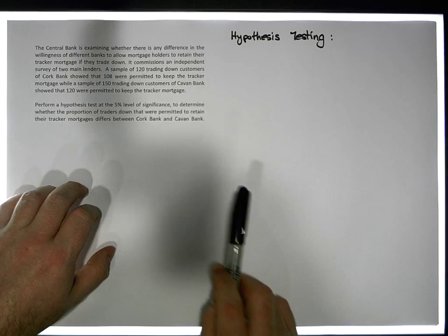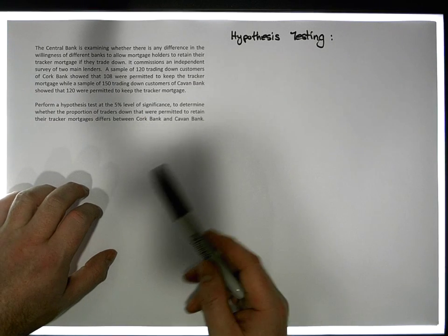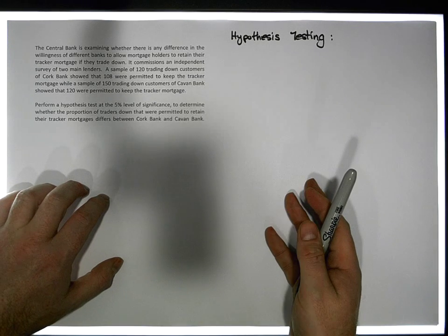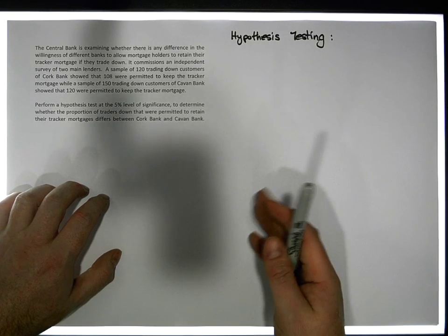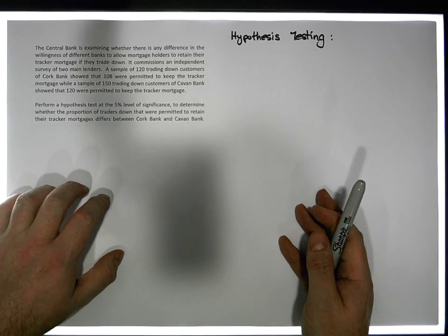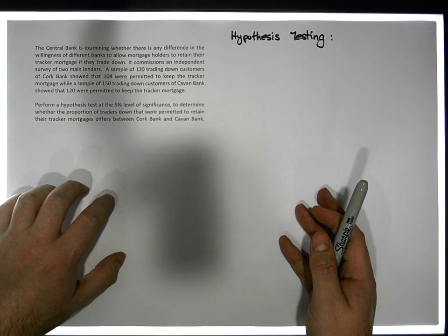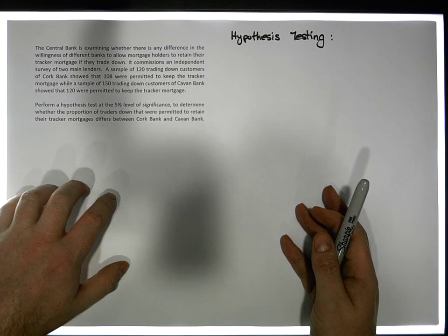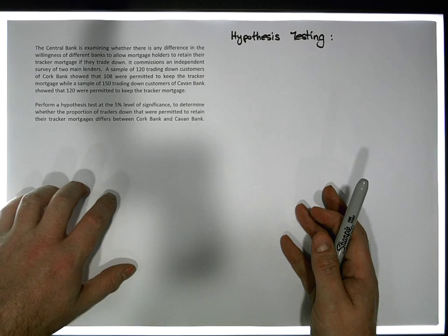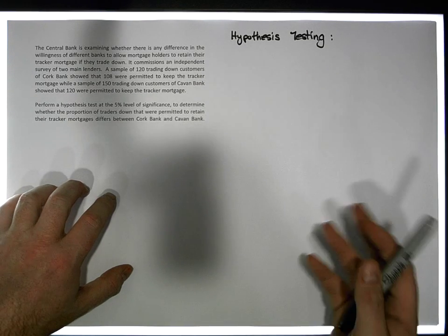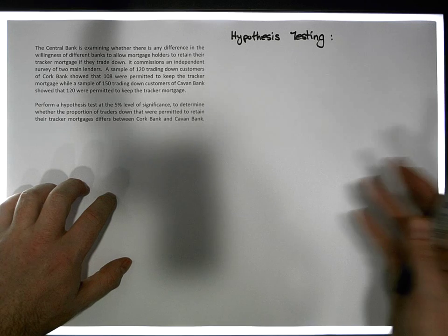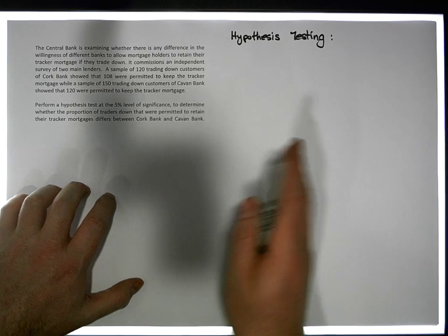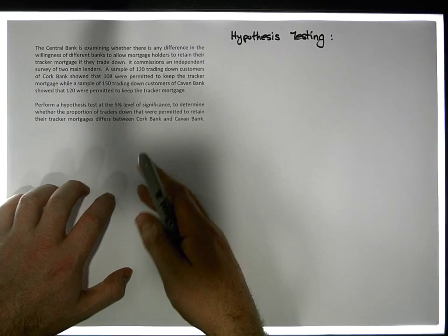The first thing is the context. This context has to do with the Central Bank in Ireland and people that hold mortgages with respect to their homes. There's a particular concept called the trading down concept. It's where somebody has a particular home, maybe a four bedroom or three bedroom house. They've got older, their children have left the home. They want to trade down to a smaller home but they still have a mortgage. They don't need such a big house.